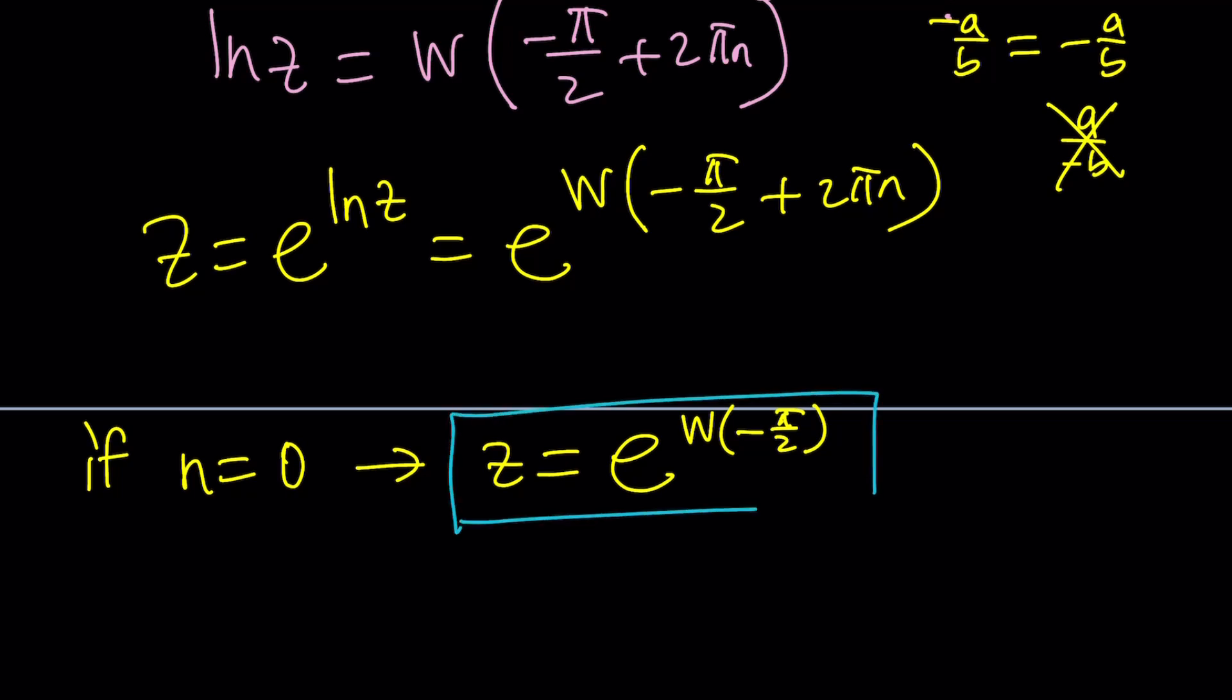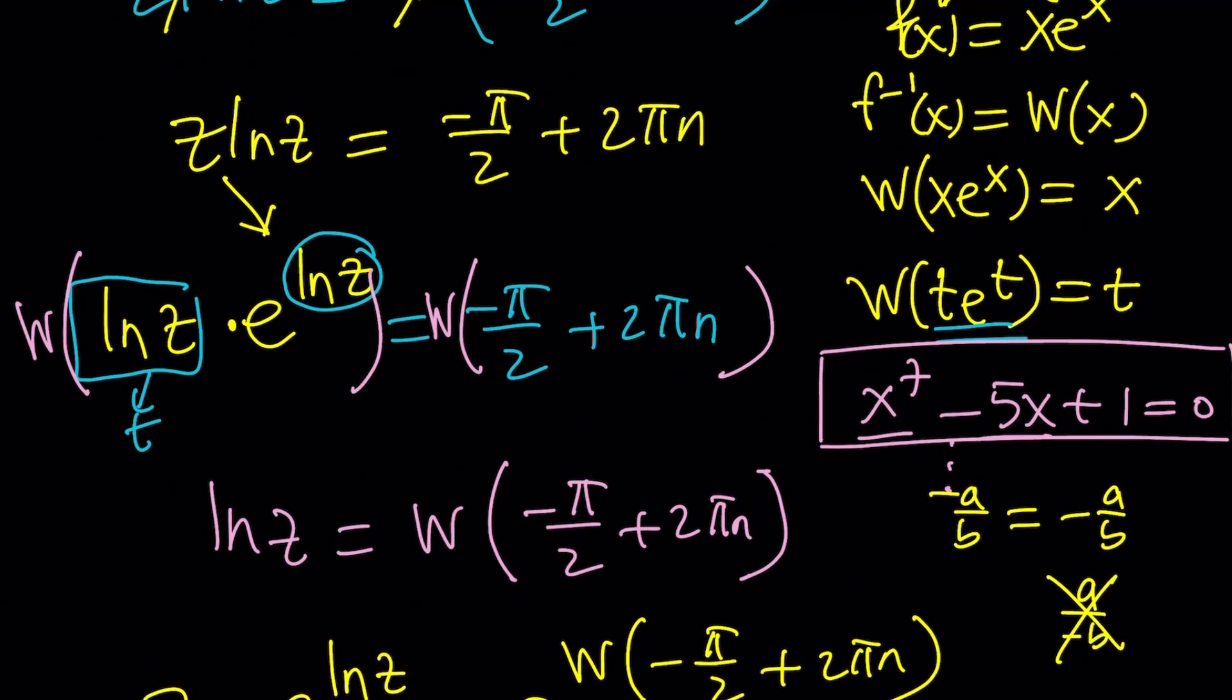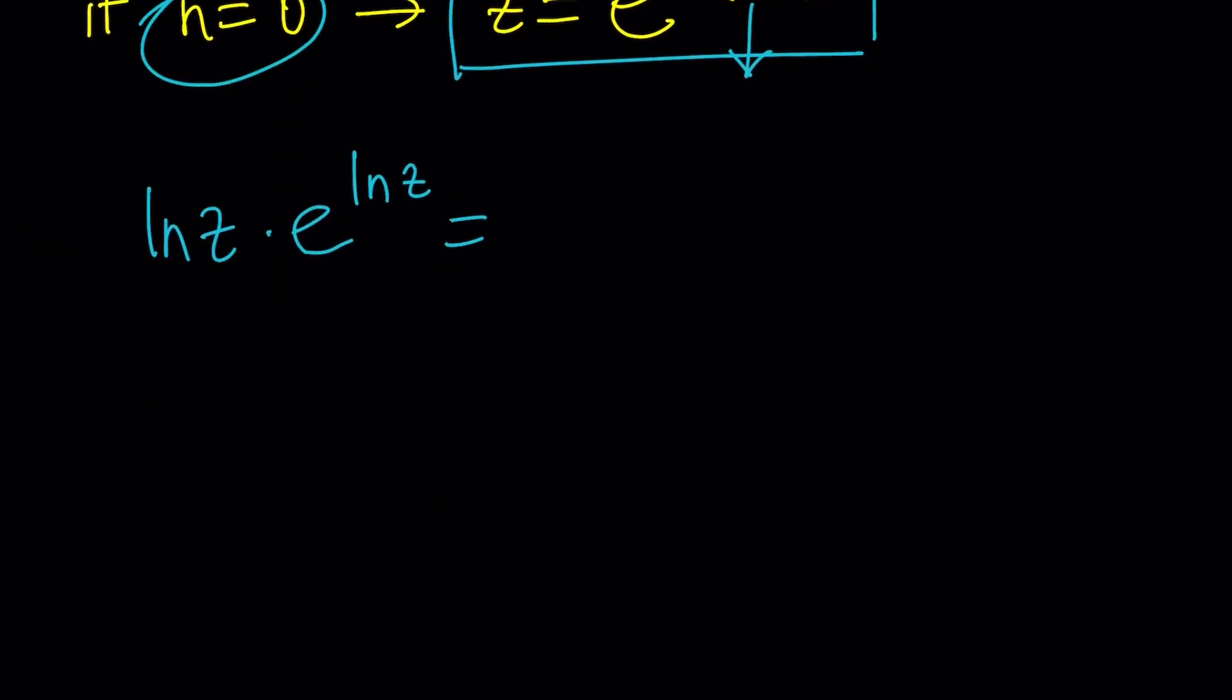So we kind of settle for this solution or dig a little deeper? Because remember I told you at the beginning you probably guessed the solution, right? Let's take a look. I'm going to go ahead and work on this W of negative π over 2 a little bit. So to find out what it is, I'm going to start with this: ln z times e to the ln z is equal to negative π over 2 plus 2πn, but I want to use n equals 0 so I'm just going to write negative π over 2.